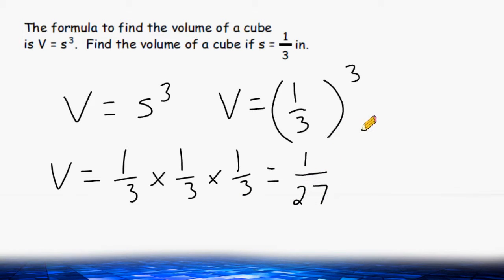So the volume of a cube with an edge length of one-third of an inch is equal to one-twenty-seventh of a cubic inch.